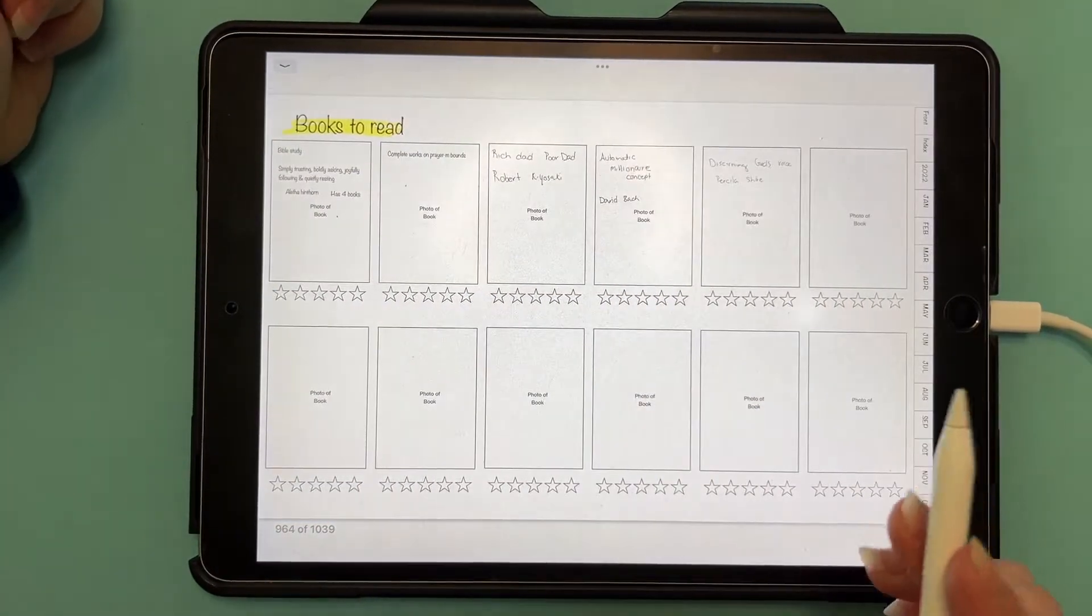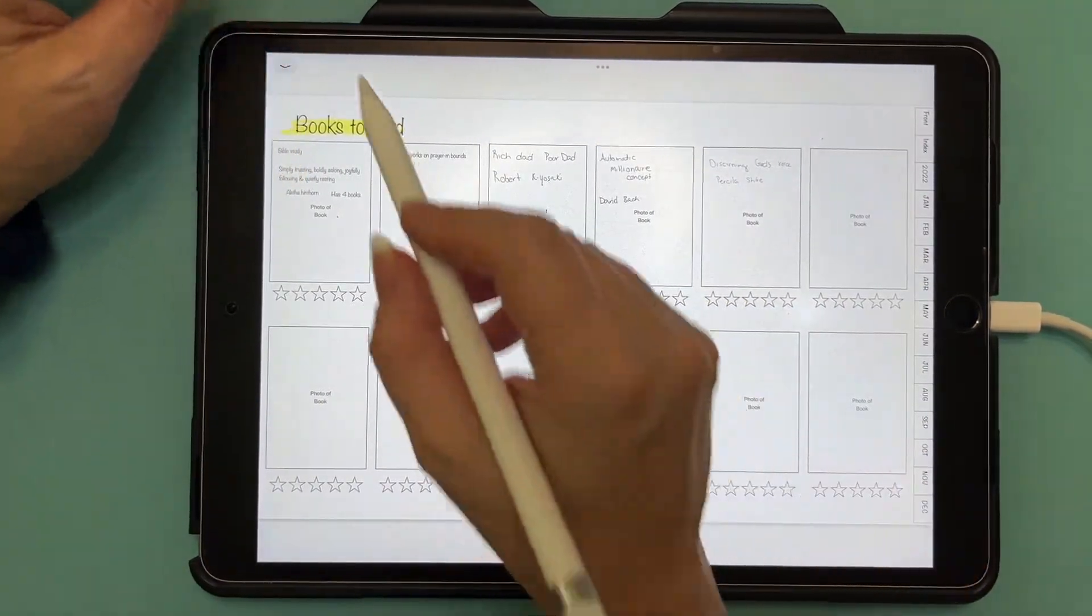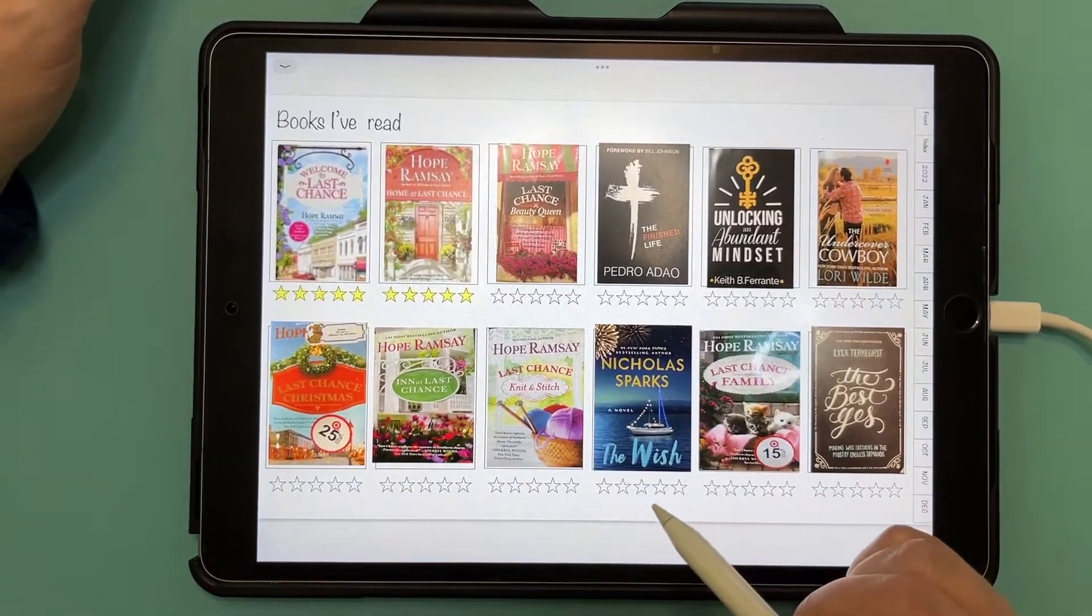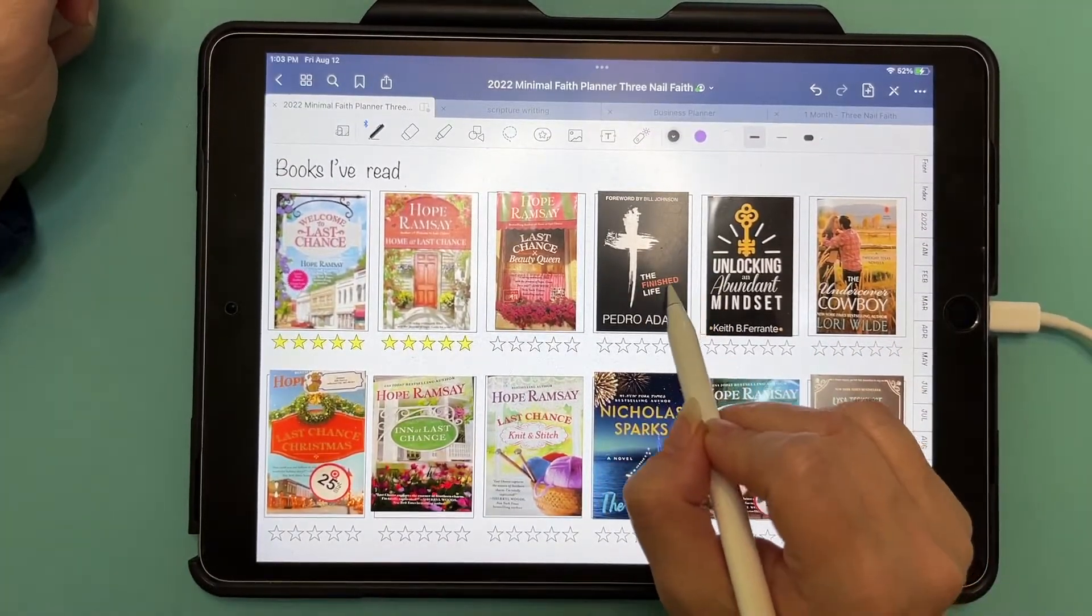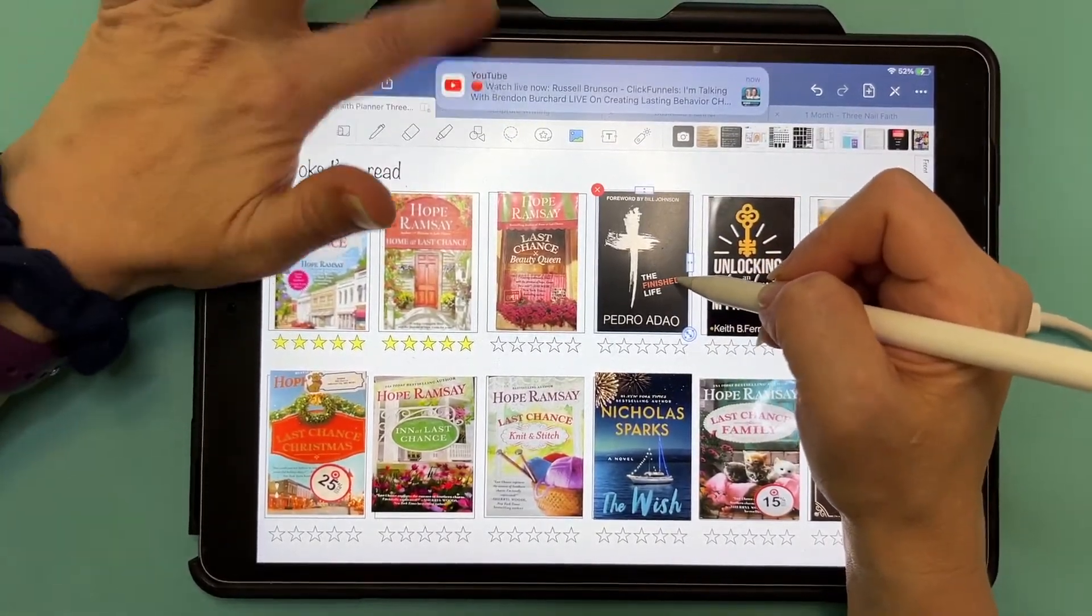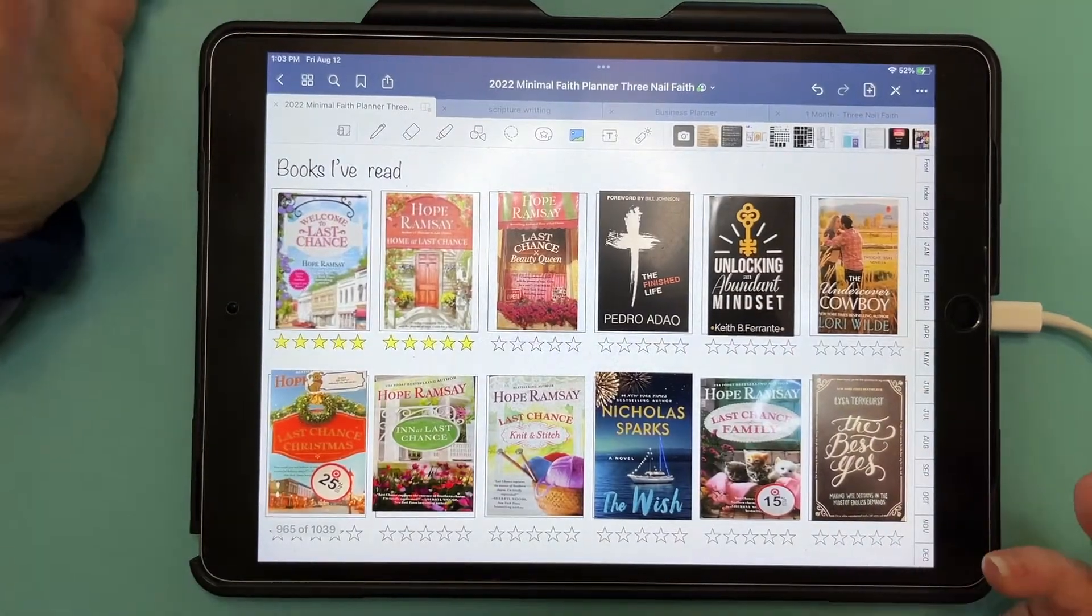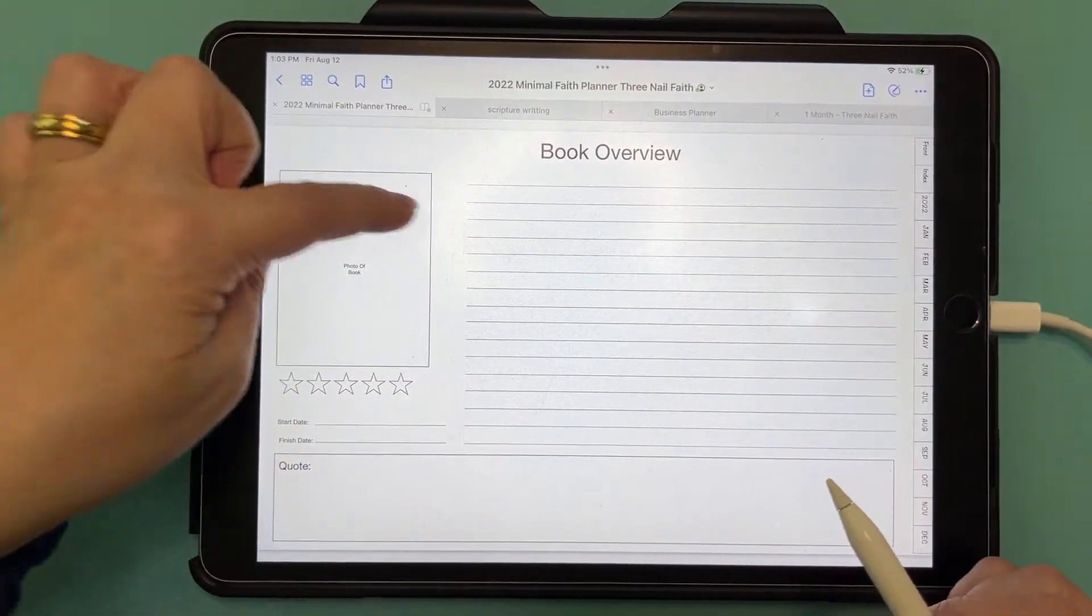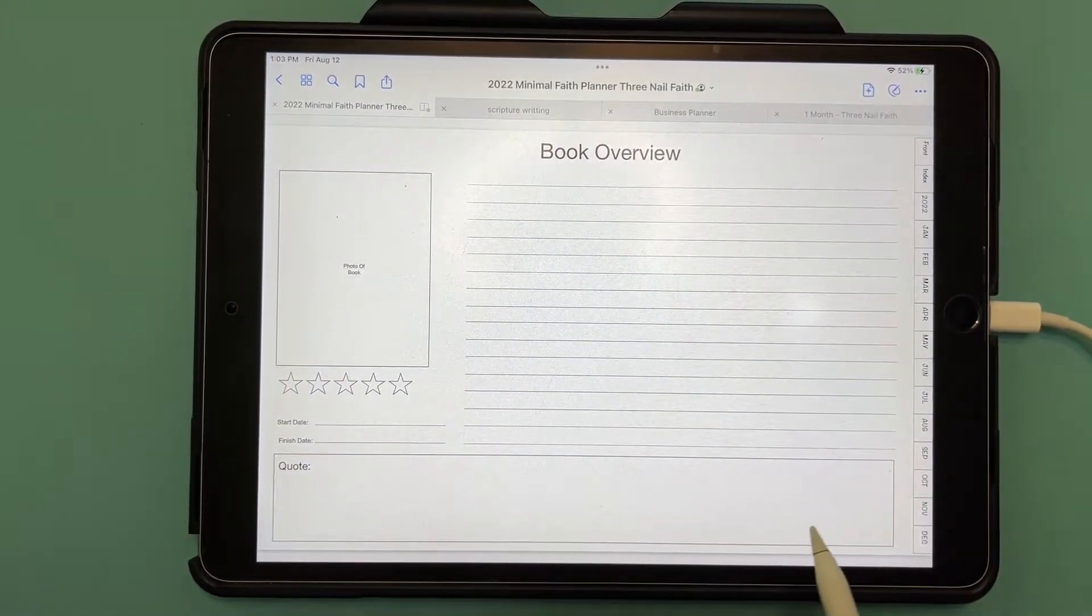We got books. It comes with books and I made it books to read, books I want to read, and then books I've read. Basically all you do is you take a snapshot of your book and then you just resize it to your little rectangle and then you can fill in your stars if you want. I'm just doing this to see how many books I read in a year. And then we also have a book review. You would put the cover of your book here, the stars, and then what you thought about it. Date you started, date you finished. If you want your favorite quote.